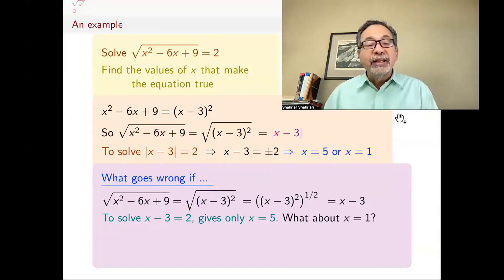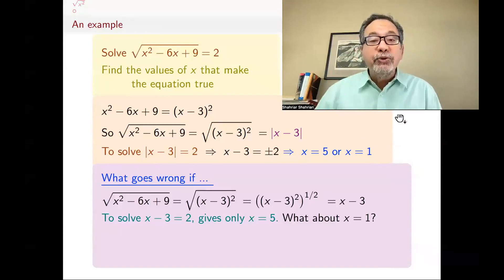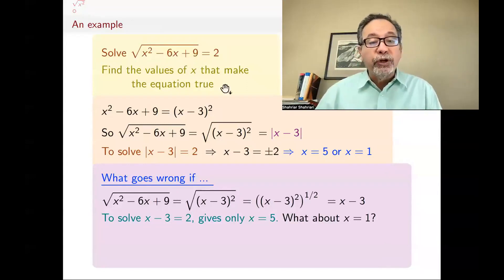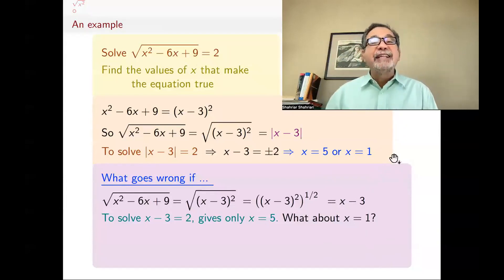But what happened to the other solution, x equals 1? Was x equals 1 really a solution? You can plug it in: 1 squared minus 6 times 1 is 1 minus 6, which is minus 5, plus 9 is 4, and square root of 4 is 2. So 1 is a solution, but this method of solving did not give us x equals 1.